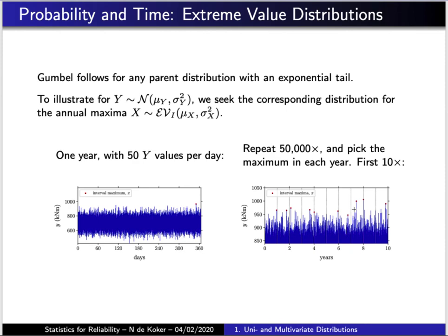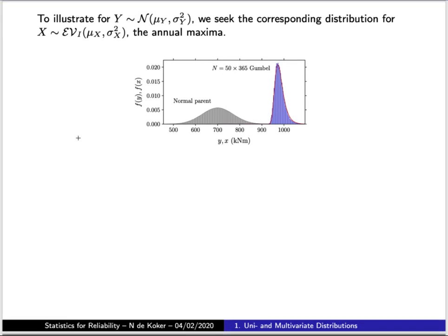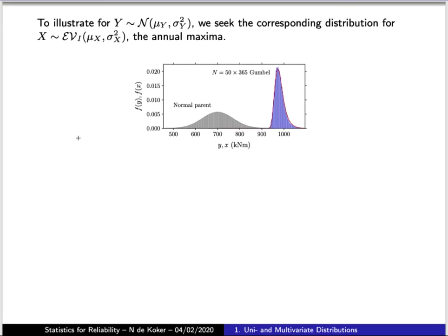Repeating the process for 50,000 times means generating 50,000 × 50 × 365 random values, dividing into 50,000 intervals, and picking the largest value from each. A histogram of the parent distribution — all those values — shows the base distribution, while the corresponding histogram of the 50,000 annual maxima is clearly shifted far above the parent distribution histogram.